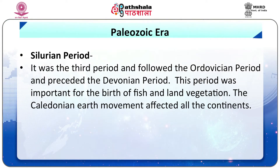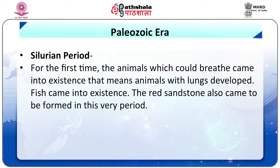The Silurian period was the third period of the Paleozoic, following the Ordovician and preceding the Devonian. This period was important for the birth of fish and land vegetation. The Caledonian earth movement affected all the continents. For the first time, animals which could breathe came into existence — that means animals with lungs developed. Fish came into existence. The red sandstone also came to be formed in this period.